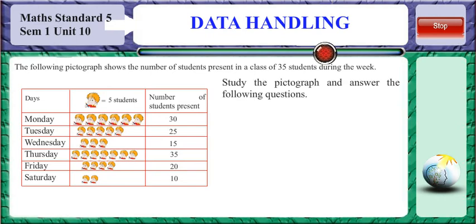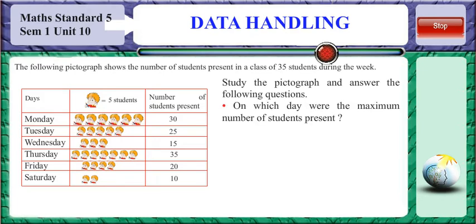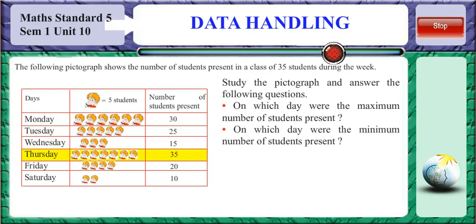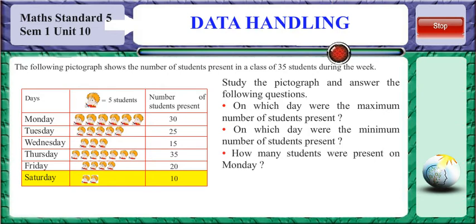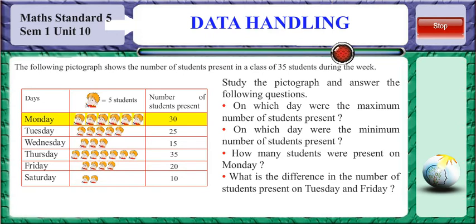Now studying the pictograph, answer the following questions. On which day were the maximum number of students present? On Thursday the maximum number of students were present, which is 35. On which day were the minimum number of students present? On Saturday, the minimum number of students were present, which were 10. How many students were present on Monday? On Monday, 30 students were present. What is the difference in the number of students present on Tuesday and Friday? On Tuesday 25 students were present and on Friday 20 students were present, so the difference is 25 minus 20, which is 5 students.